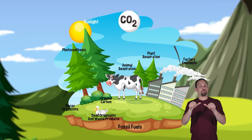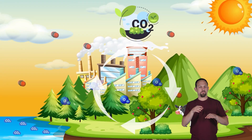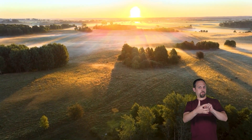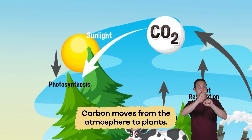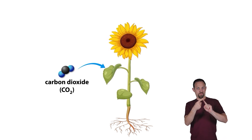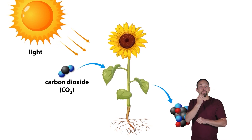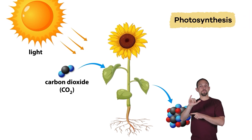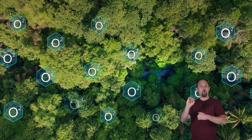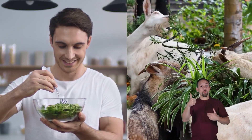Instead, it is a continuous process with several steps. Let's start with the atmosphere. Carbon moves from the atmosphere to plants. During this step, plants take in carbon dioxide from the air and combine it with the energy from the sun to create their own food in a process called photosynthesis. As the plants break down carbon dioxide, they release oxygen.